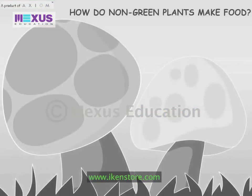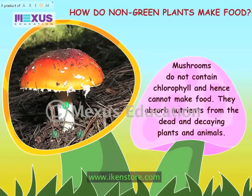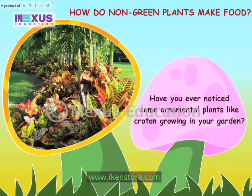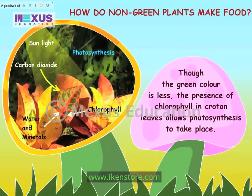How do non-green plants make food? Mushrooms do not contain chlorophyll and hence cannot make food. They absorb nutrients from dead and decaying plants and animals. Some ornamental plants like crotons have red-colored leaves. The red pigment in leaves hides the green color of the chlorophyll, but the presence of chlorophyll in croton leaves still allows photosynthesis to take place.